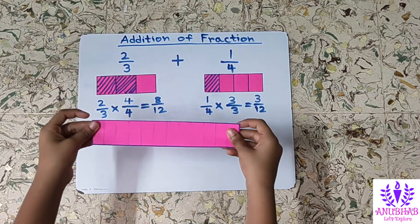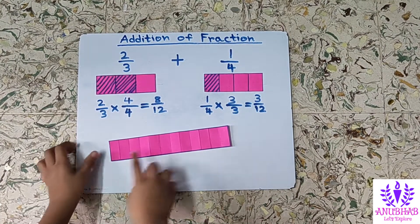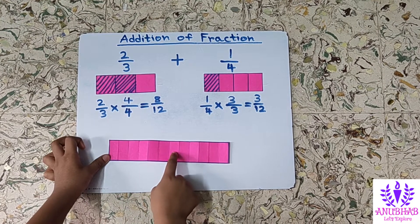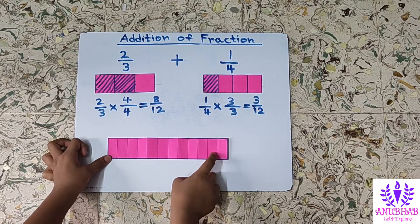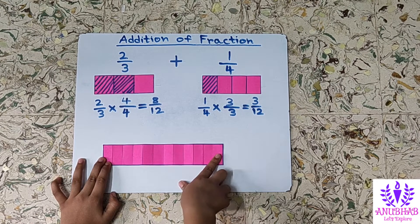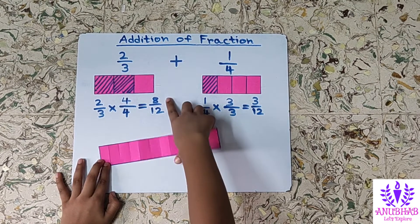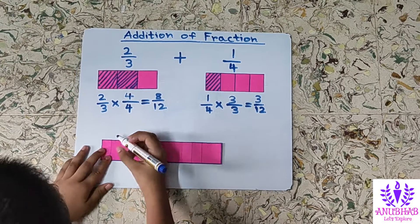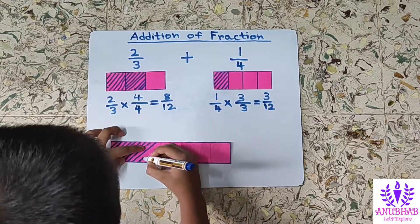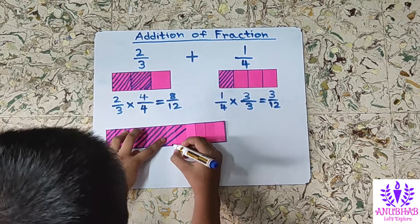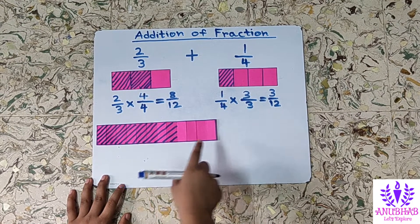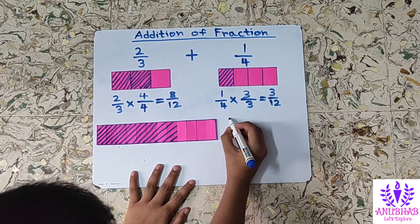So friends see, we have made 12 equal parts: 1, 2, 3, 4, 5, 6, 7, 8, 9, 10, 11, and 12. Now we will shade the 8 parts among these 12 parts because the numerator is 8. So here I have shaded 8 parts. It represents 8 by 12.